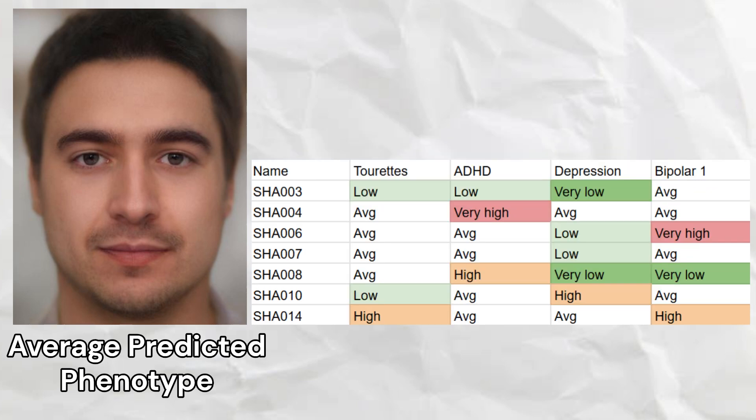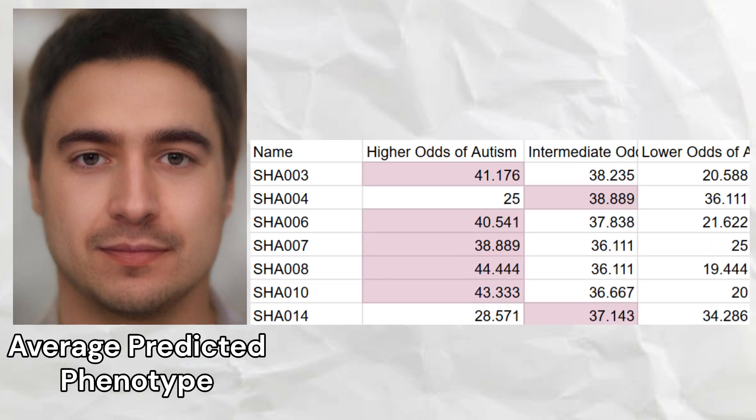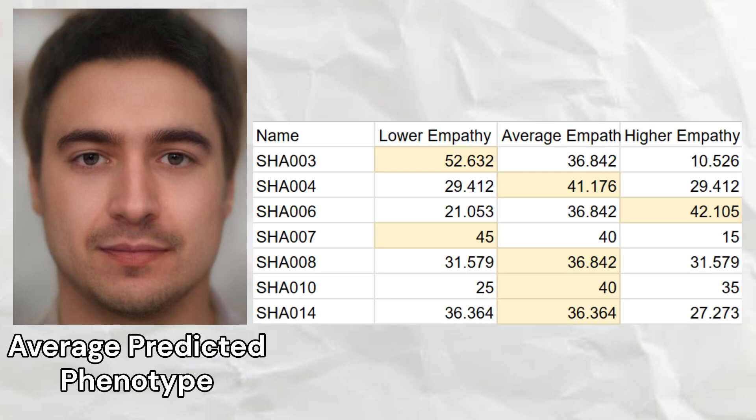One of the samples had a hyperdisposition to Tourette's, two samples had a hyperdisposition to ADHD, one sample had a hyperdisposition to unipolar depression, and two samples had a hyperdisposition to bipolar disorder. Five samples had a hyperdisposition to autism, while two samples had intermediate odds of autism. Two samples from Shah Tepe were predisposed to lower levels of empathy, while one sample was predisposed to higher levels of empathy, on the basis of OXTR genotypes.